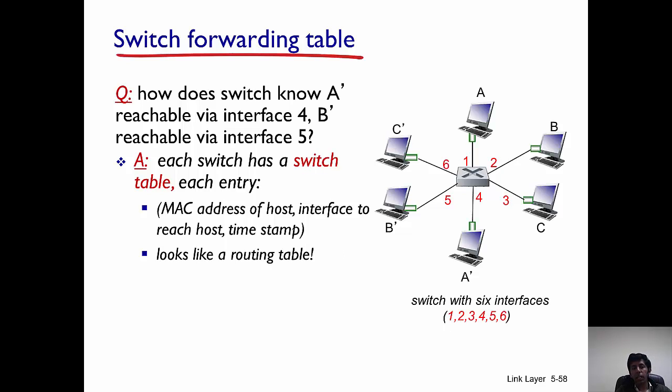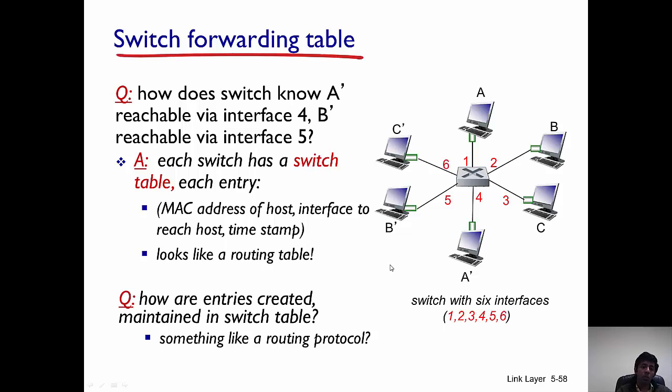The answer is, the switch maintains something like a switch table. It looks very similar to a routing table. What it has is the MAC address of the host and the interface through which the host can be reached and a timestamp. So it keeps track of through which interface a particular host can be reached.